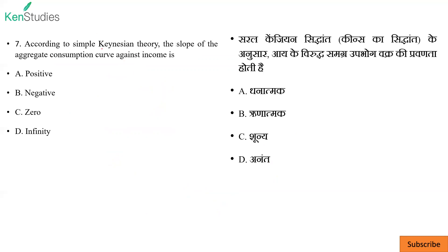Next: according to simple Keynesian theory, the slope of the aggregate consumption curve against income — देखो, simple Keynesian theory में income बढ़ने के साथ साथ consumption बढ़ेगा. 10,000 income था, 12,000 हो जाएगा तो aggregate consumption बढ़ेगा — कितना बढ़ेगा depend करता है, लेकिन positive में ही बढ़ेगा. तो slope positive ही होगा, तो A इसका answer हो गया।